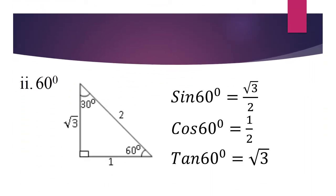Our second special angle is 60 degrees. We can use the same triangle. Sin 60 is root 3 over 2, cos 60 is 1 over 2, tan 60 is root 3.